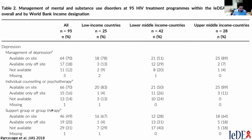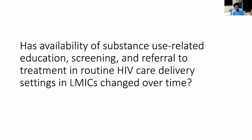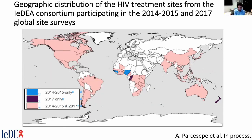This was in a paper by Angela Parcesepe published in JIS. There were also questions about substance use-related education, screening, and referral. Angela did another analysis about whether or not this has changed over time, taking advantage of the multiple waves of site assessments — one in 2014-2015 and one in 2017. You could see where sites in IDEA participated in one round or two rounds of site assessments, providing a real opportunity to look at how services for substance use screening, management, and referral have been changing over time.